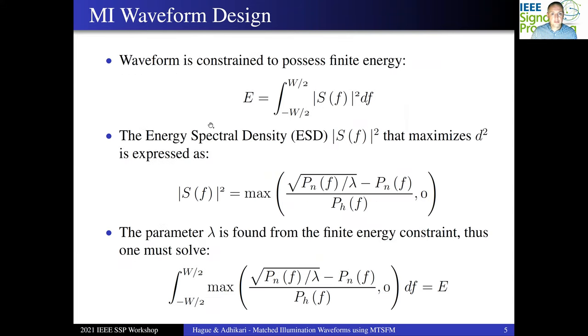Now, the waveform itself is constrained to possess a finite energy. The energy spectral density, or ESD, the magnitude square of the waveform spectrum, that maximizes that d squared metric is expressed in the following relation. It's in terms of the noise and clutter power spectral densities. Lambda is a parameter that we can find from the finite energy constraint. So we solve this equation, find lambda, and we can plug back in to get our ESD shape.